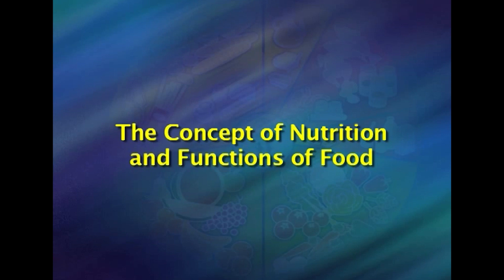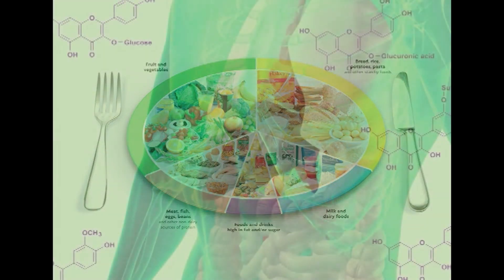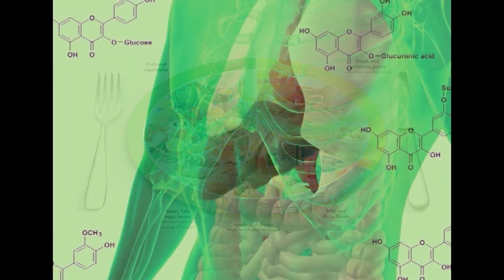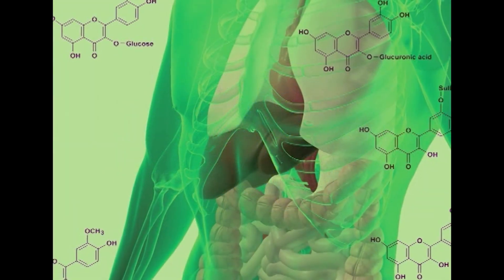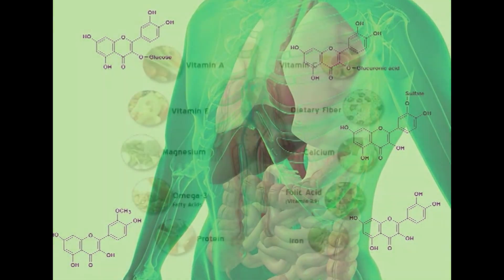Here we are going to learn what is the definition of nutrition, what is the classification of food, and what are the functions of food. Nutrition has been defined as food at work in the body. It includes everything that happens to food from the time it is eaten until it is used for the various functions in our body.